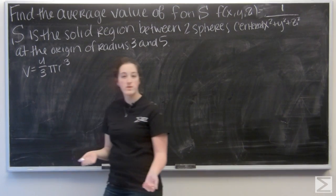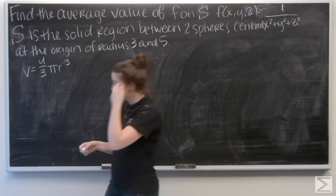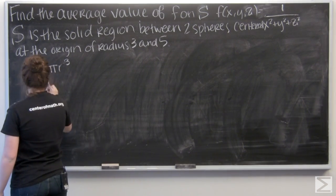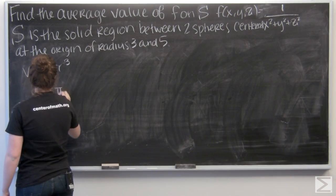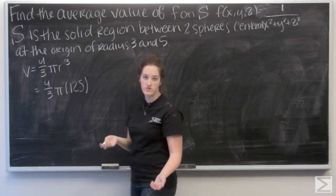So remember the volume of the sphere is 4 thirds pi r cubed. So let me plug in 5 first. So I have 4 thirds pi times 125.